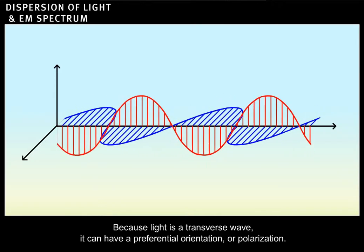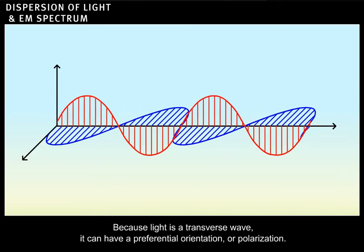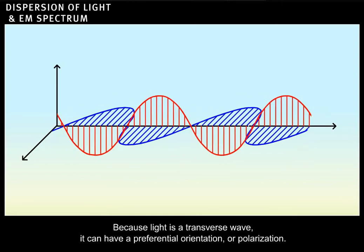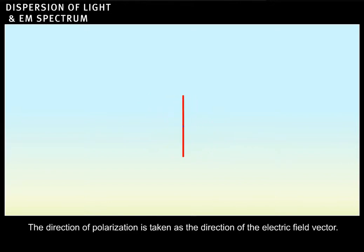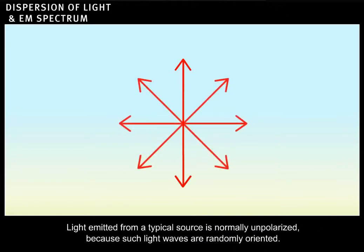Because light is a transverse wave, it can have a preferential orientation, or polarization. The direction of polarization is taken as the direction of the electric field vector. Light emitted from a typical source is normally unpolarized, because such light waves are randomly oriented.